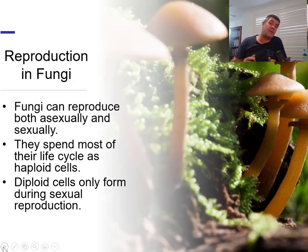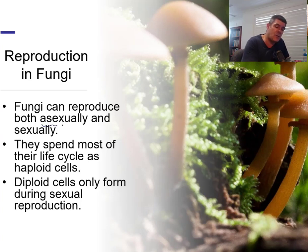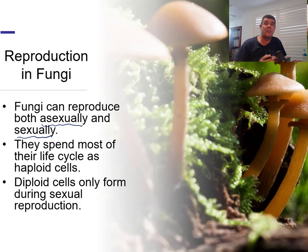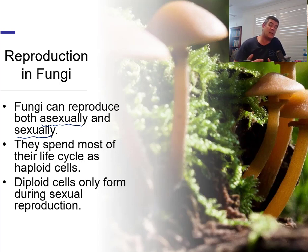The fungal group includes a number of different types, from the single-celled yeast that we use for fermentation to probably the organism we most readily think of — mushrooms or toadstools. Fungi can reproduce both sexually and asexually. Because the predominant method of reproduction for fungi is asexual, they do spend most of their life as haploid cells. This video focuses on budding and spore formation. When cells do reproduce via sexual reproduction, two different cells come together, producing diploid cells — something we'll look at briefly at the end.